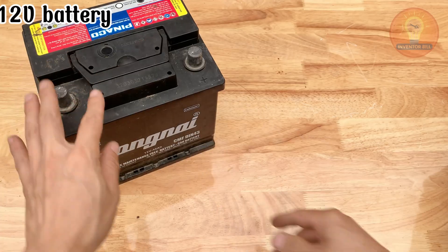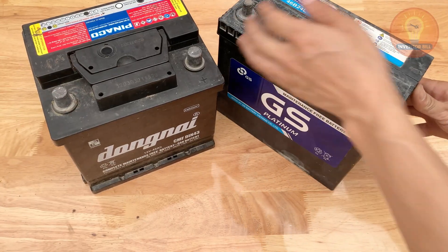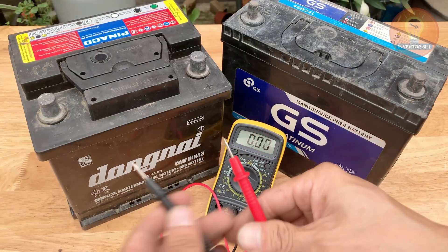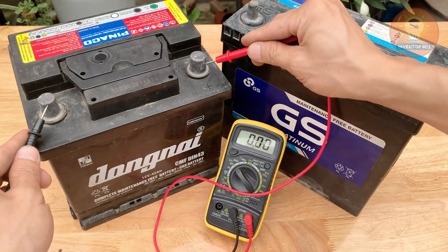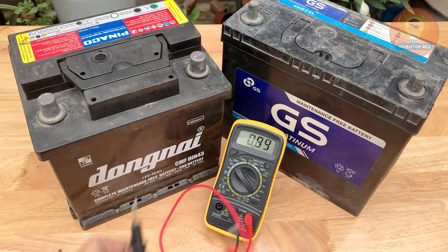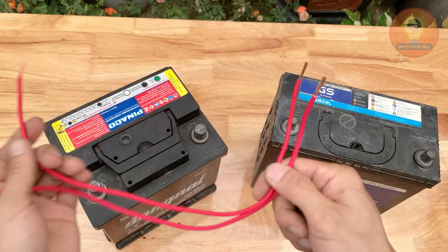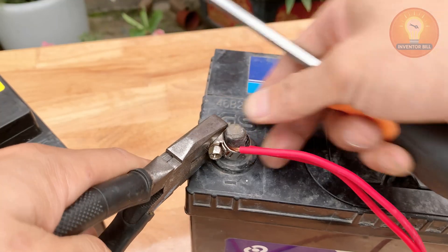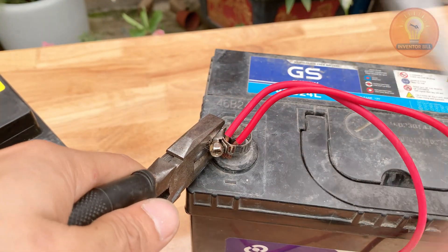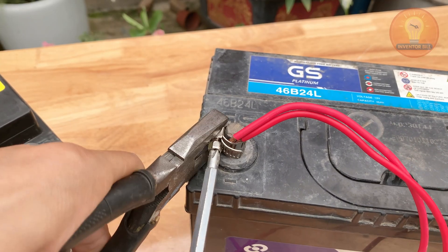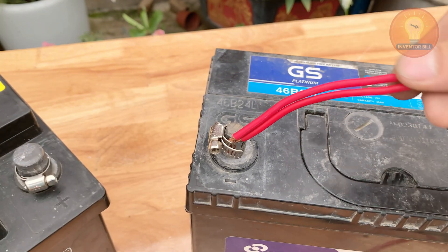Now let's power it up and see what this homemade setup can do. You'll need two 12 volt batteries. The kind used in cars or motorbikes will work just fine. Place them side by side on a flat, stable surface. Use a red wire to connect the positive terminal of the first battery to the negative terminal of the second. This links them together in series, giving you a total of 24 volts, which is perfect for small welding jobs.